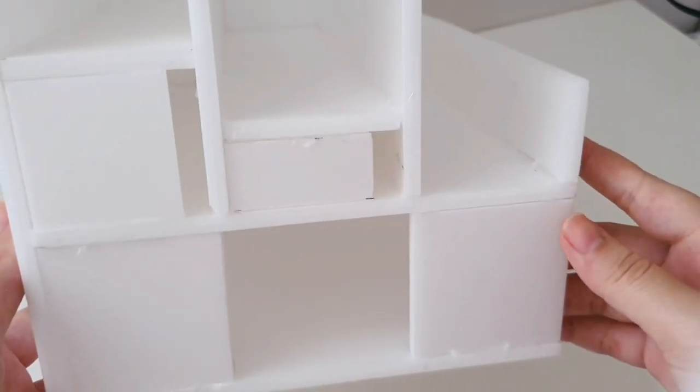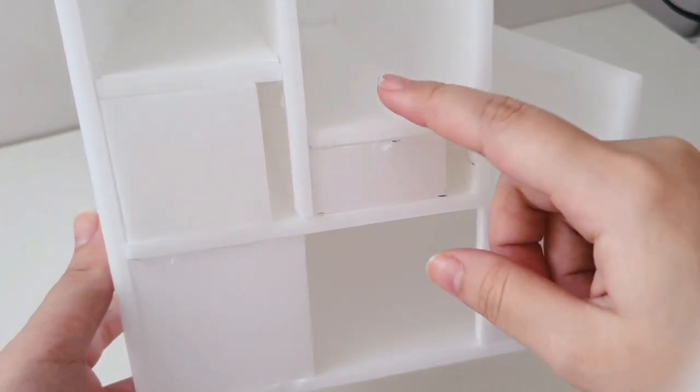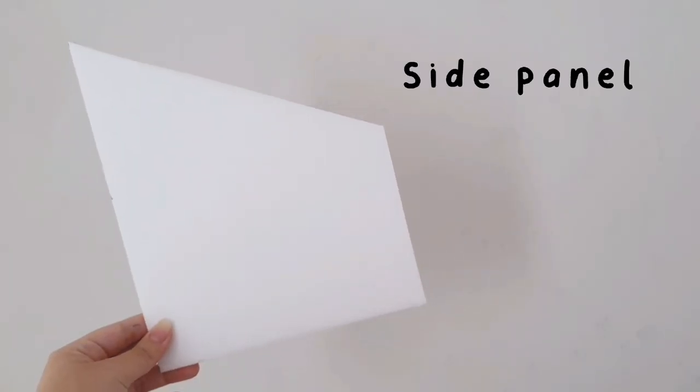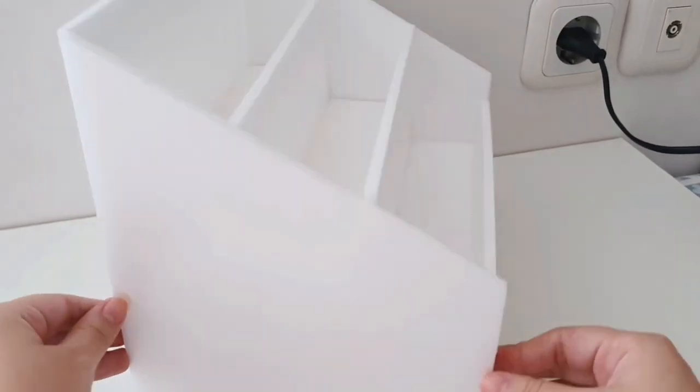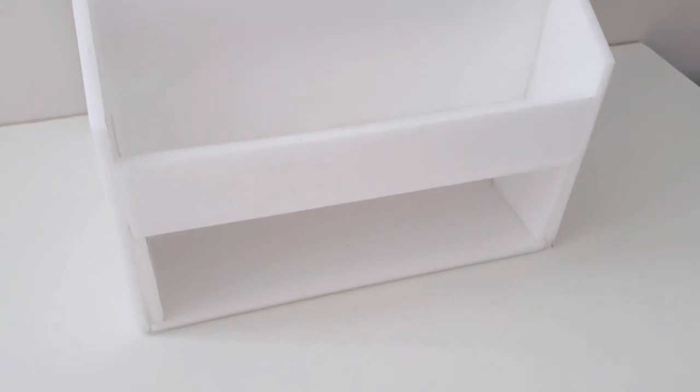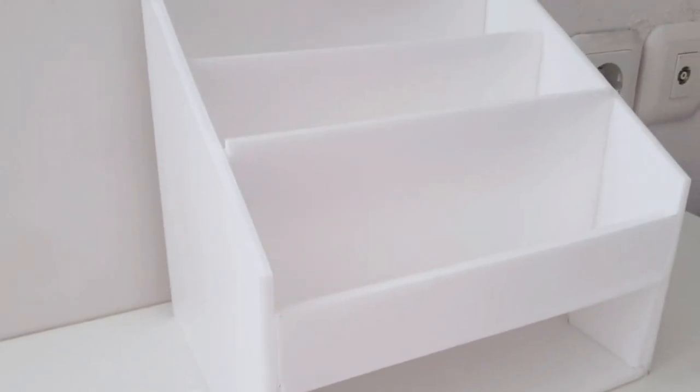This is what your organizer should look like from the side, and as you can see here we actually have a staircase kind of thing. Next you want to take the second side panel and simply use your glue gun to stick it onto the side. This is what it looks like right now. You can definitely stop here, but I want to have a drawer on the bottom side so I can use it to store my sticker flakes, so I'm going to make the drawers.